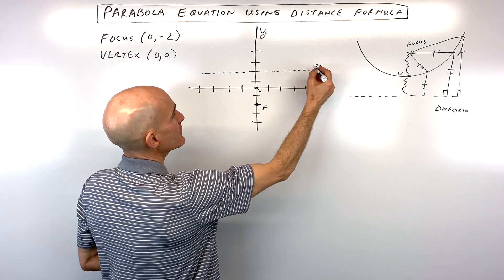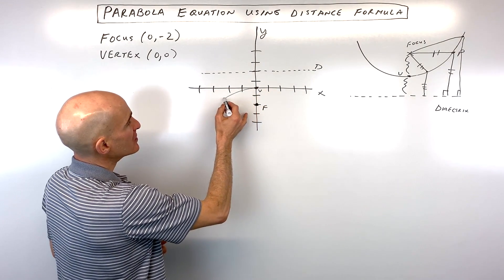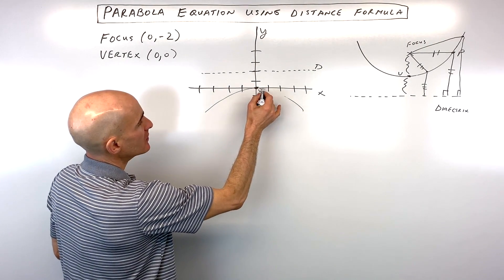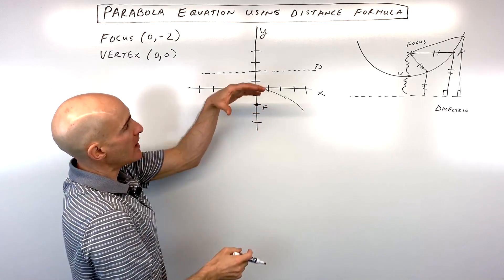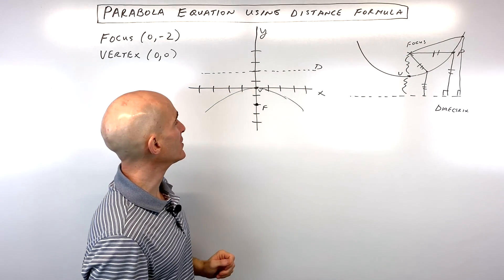I'll just say D for directrix. So we know that our parabola is opening towards the focus, something like that, and away from the directrix. So it's kind of bending away from the directrix, opening towards the focus.